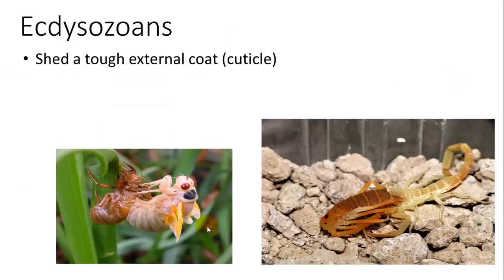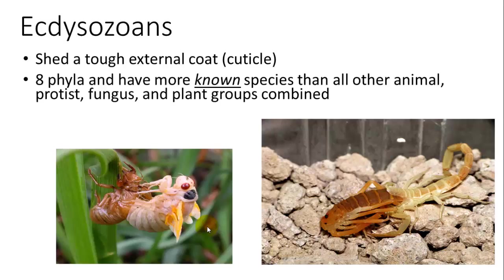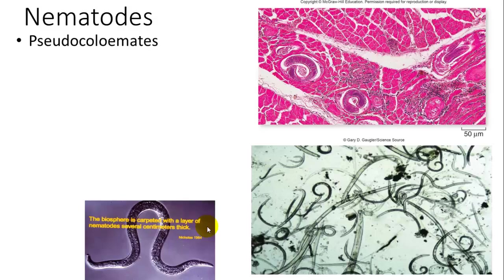Ecdysozoans have an exoskeleton they shed in order to grow. There are eight phyla, and there are more known species in Ecdysozoa than in all other animal, protist, fungus, and plant groups combined. They include nematodes and arthropods. Nematodes are pseudocoelomates.